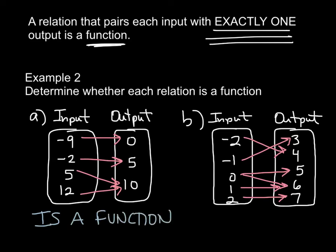Let's now look at part B. This negative 2 goes to one output, negative 1 goes to one output. This 0 goes to 5 and 6. That cannot be done. You cannot have an input or an x value that goes to more than one area. So we know because of 0, part B is not a function.